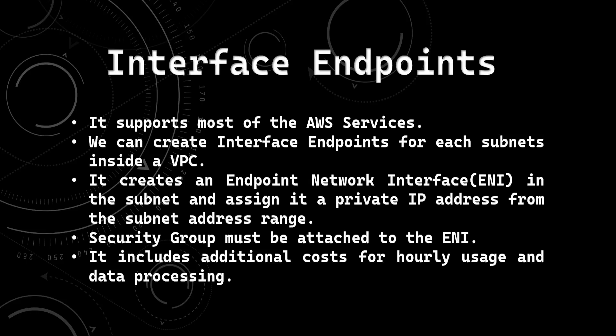We can create interface endpoints for each subnet inside a VPC — that means for a particular subnet, we can create an interface endpoint. It creates an endpoint network interface in the subnet and assigns it a private IP address from the subnet's address range. A security group must be attached to the endpoint network interface. It also includes additional costs for hourly usage and data processing.